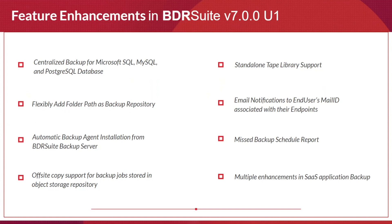Apart from new features, there are enhancements in version 7.0 U1. Centralized management for applications and databases now supports Microsoft SQL, MySQL, and PostgreSQL to be configured directly from the BDR Suite web console. Exchange Server and SharePoint backups continue to use the Rainbow Network Backup Client — now called BDR Suite Client for Files and Applications. Additionally, folder path is now supported as a backup repository in block storage.